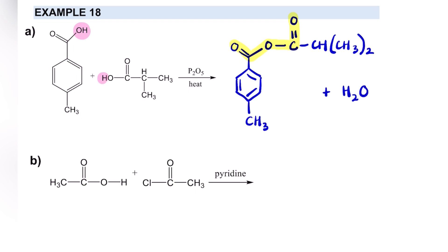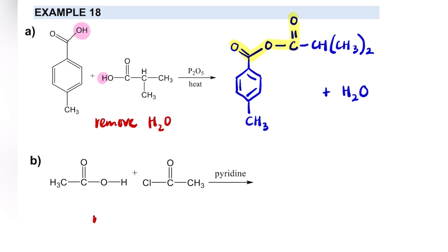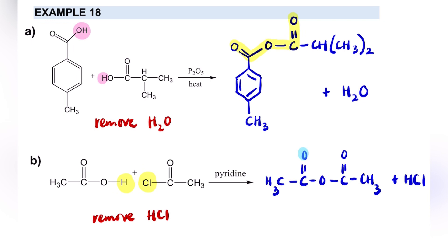Now for part B — this reaction also produces an anhydride because we have pyridine and acyl chloride as the reagent. The difference is that here we remove HCl instead of H₂O. I remove H from the carboxylic acid and Cl from the acyl chloride, then combine the rest. This gives the anhydride functional group, and HCl as the side product. That is how you draw the structure for anhydride formation via acyl chloride.